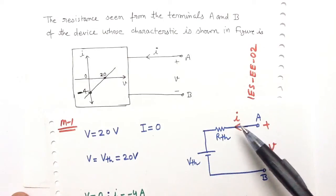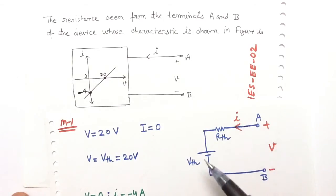When this current is 0, then V is equal to VTH. So V equals VTH equals 20V.